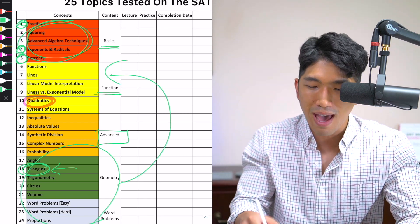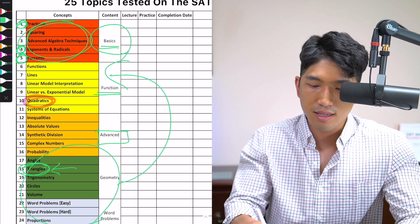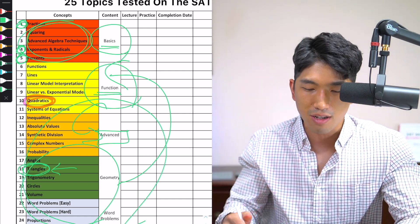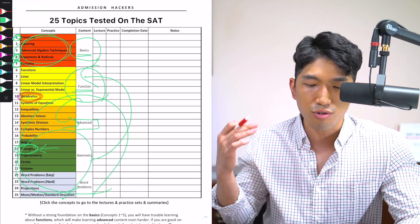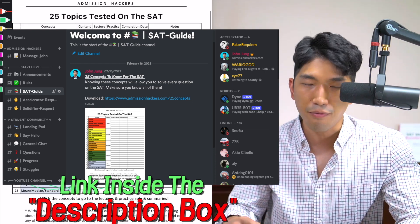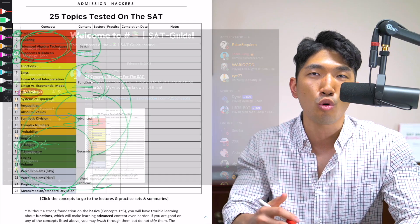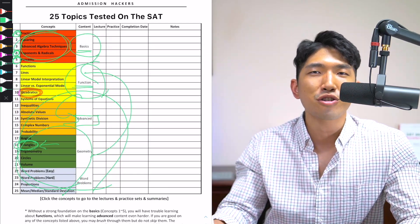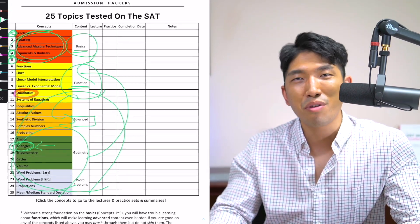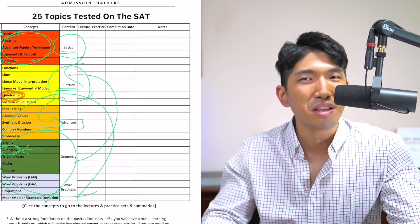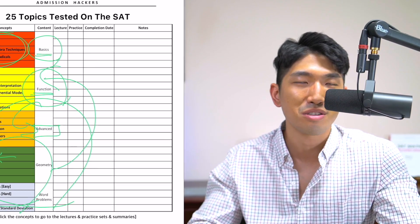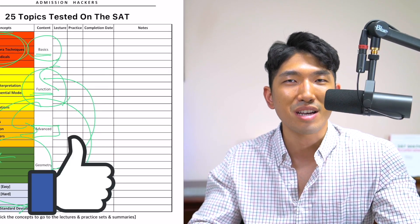If you want to get the full list of all 25 concepts in the order they're supposed to be studied, you can go to our Discord server linked down below, go to the SAT guide channel, and simply click to download and get the full list. That way you'll know exactly which order to study and make sure you're doing it the easy way, not the hard way like most people do. SAT may seem pretty hard in the beginning, but with the right approach and the right mindset, it's going to be significantly easier and you can definitely reach your target score. That's going to be it — see you guys on the next video.